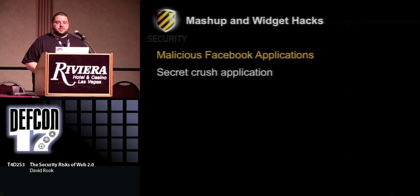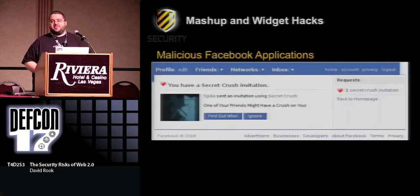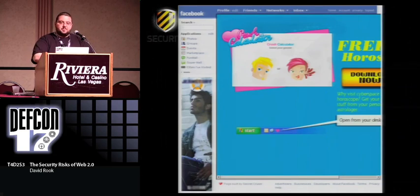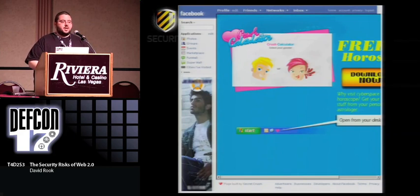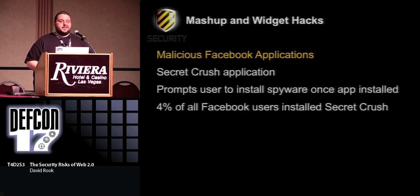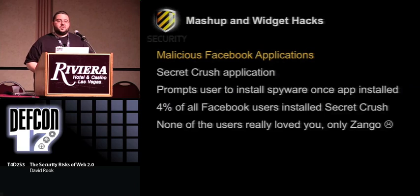In Facebook there was an application called the Secret Crush application. You get a message saying someone has a secret crush on you — do you want to find out who it is? You have to install this application. After installing, an iFrame pops up. The iFrame wasn't pushing malicious data directly, but was saying: now you've got your Facebook application, do you want to install this other thing on your desktop too? The iFrame was being served up by a company called Zango, a well-known spyware company. If you installed that on your desktop, you got spyware. They managed to get that on 4% of all Facebook profiles — 4% of 250 million users. And probably none of those users really had a secret crush on you — only Zango did.